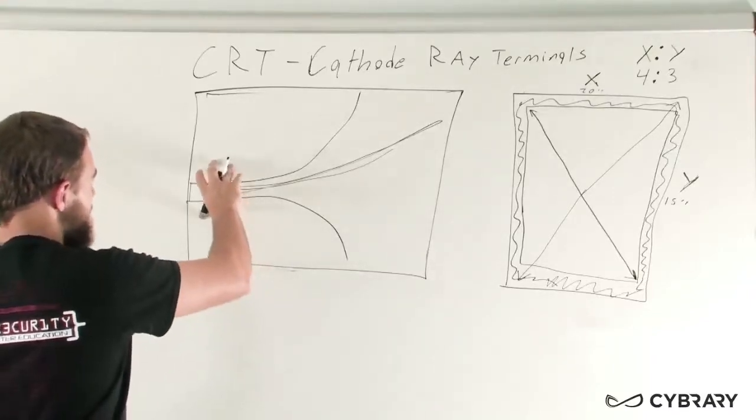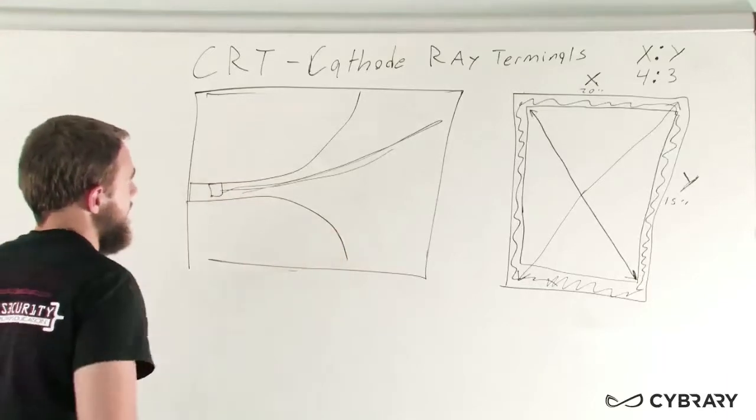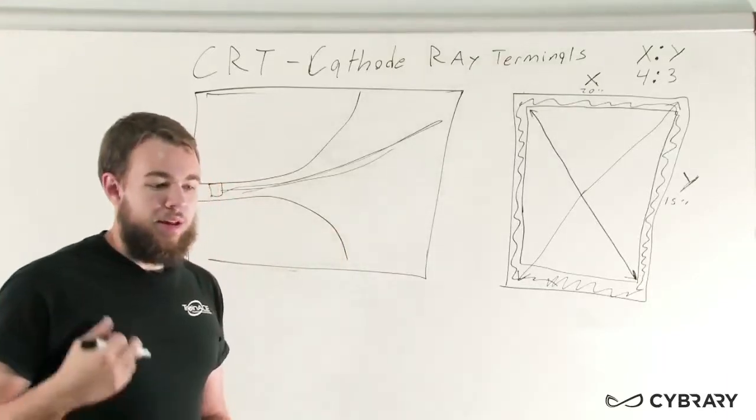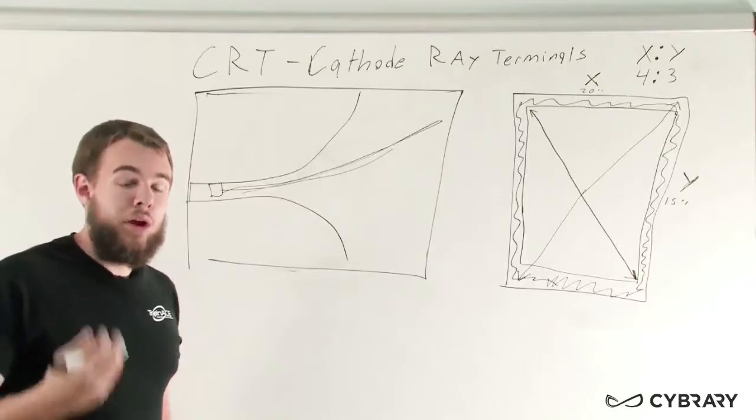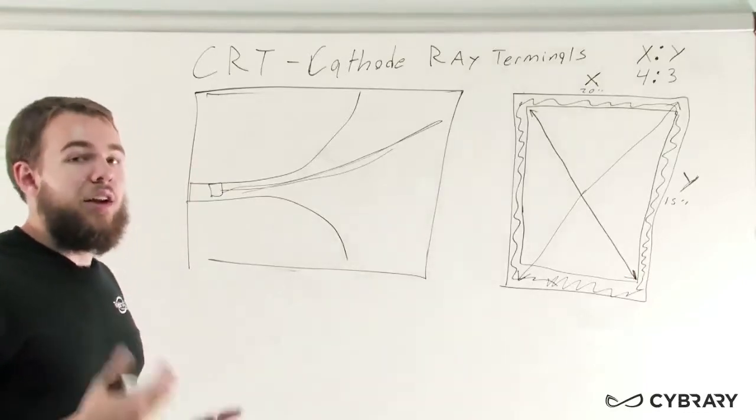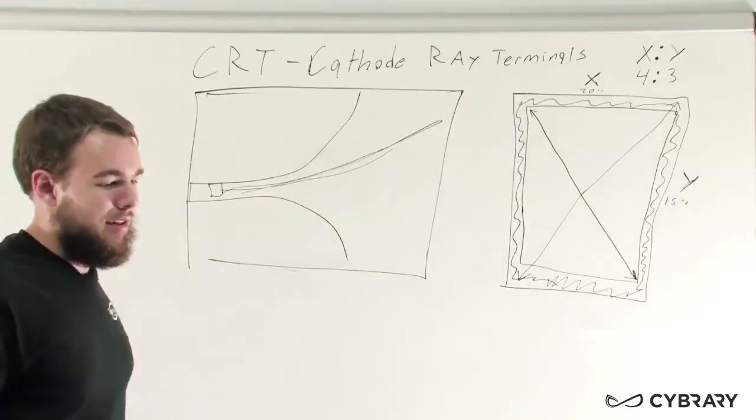So our refresh rate for our standard CRT monitor is going to be 60 hertz, 60 refreshes per second. It's undiscernible to the human eye. We can't see it.